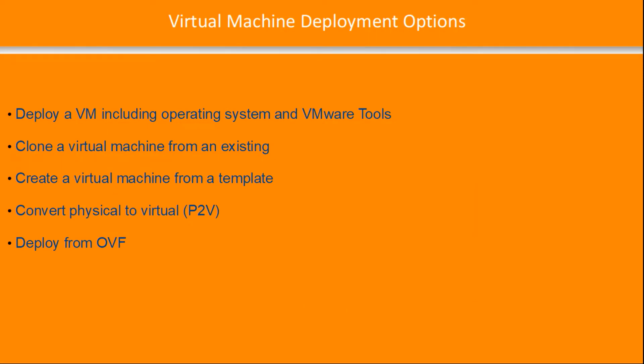VMware provides a number of deployment options to deploy a virtual machine and add it to the virtual infrastructure. Some of the options include deploying a virtual machine from scratch and adding the operating system and virtual machine tools, cloning a virtual machine from an existing virtual machine, using a template to deploy a virtual machine, converting a physical server to virtual machine using P2V, and deploying from OVF, which is Open Virtual Format.